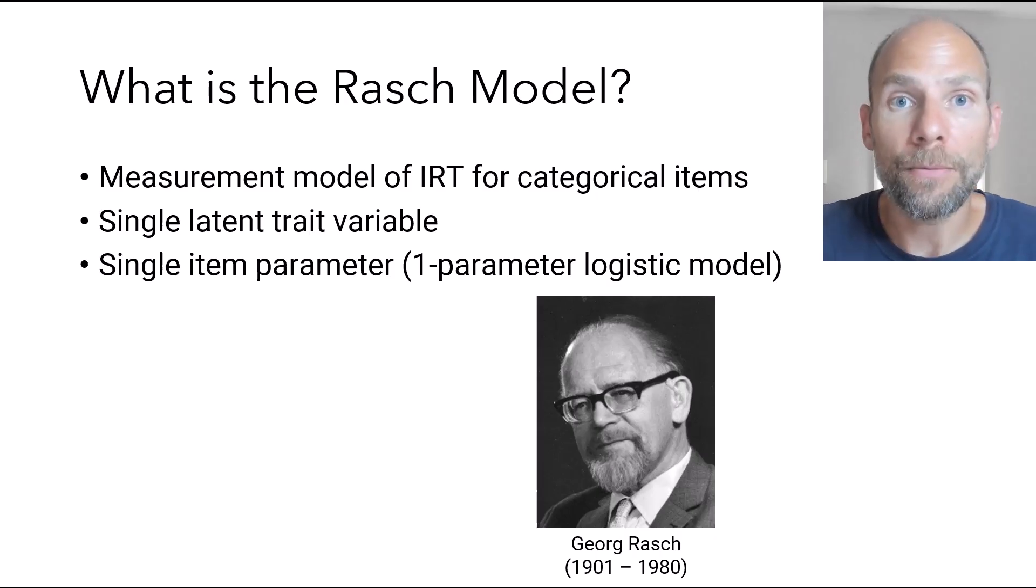So in summary, the Rasch Model is a unidimensional model. It assumes that there's only one underlying continuous ability or personality variable, like a single factor model in factor analysis. And it's even more restrictive in that it assumes that the items can only differ in terms of their difficulty, not in terms of their discrimination.